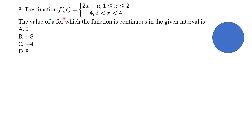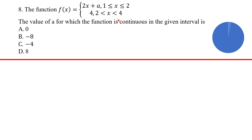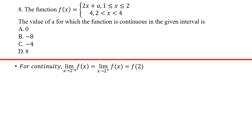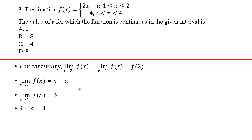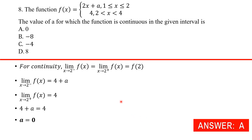For f(x) defined piecewise, to find the value of a for which the function is continuous: look at the boundary x = 2, which is common to both pieces. For continuity, the left-hand limit as x → 2 must equal the right-hand limit and f(2). The left-hand limit gives 2(2) + a = 4 + a. The right-hand limit is 4 (constant function). Setting 4 + a = 4 gives a = 0, so our answer is A.